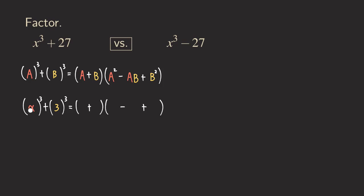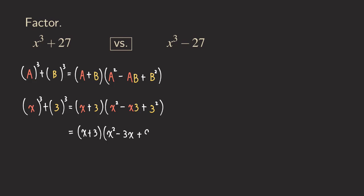Now fill in the information. X is A, so we have x in the binomial and x in the trinomial. Then fill in B, which is 3 — so we get 3 in each spot. Don't forget the squares for the first and last terms of the trinomial. This isn't fully simplified yet, so we simplify: the answer is (x + 3)(x² − 3x + 9). So we factor x³ + 27 as this expression.